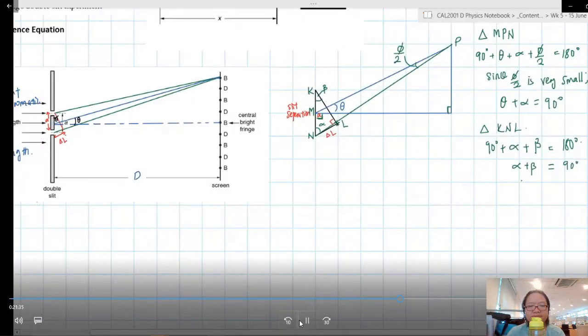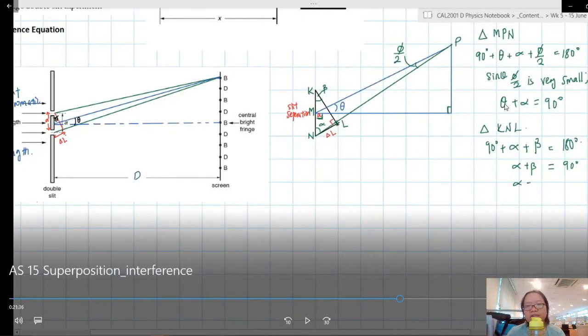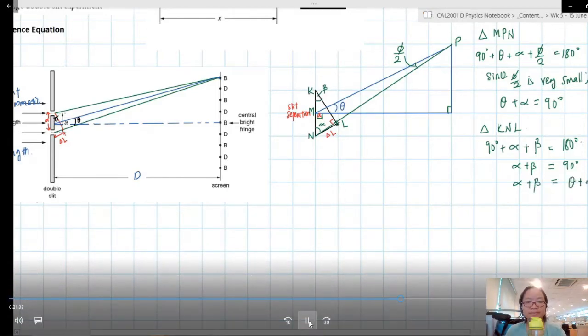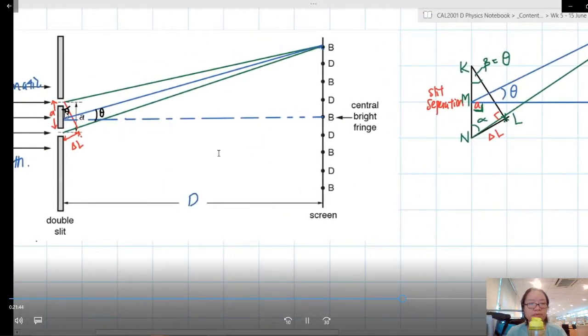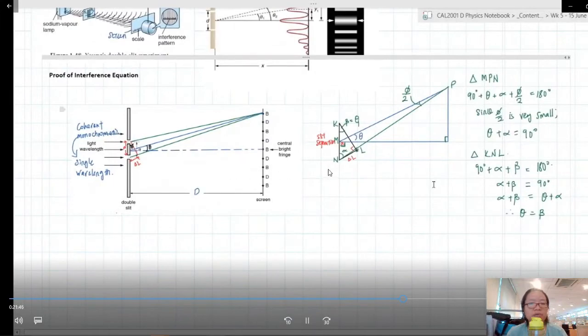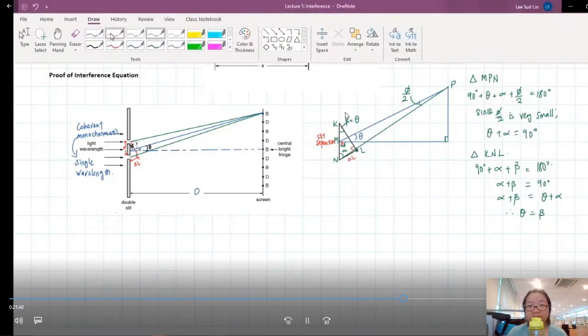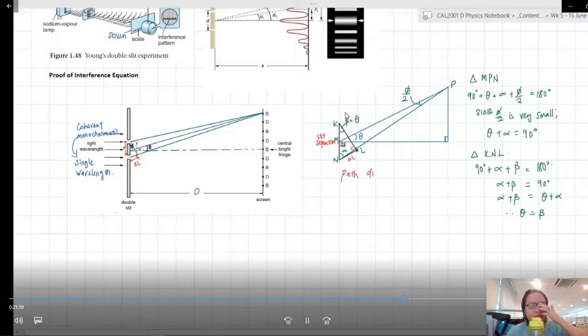If theta plus alpha is 90, and alpha plus beta is 90, so theta must be equal to beta. So this angle here, theta, must be the same as this angle here, theta. This angle beta will be equal to theta. And the reason why we need theta is because we want to find an expression for path difference.